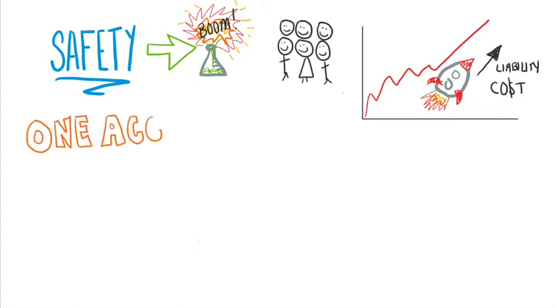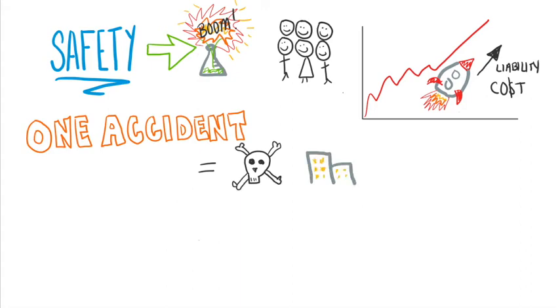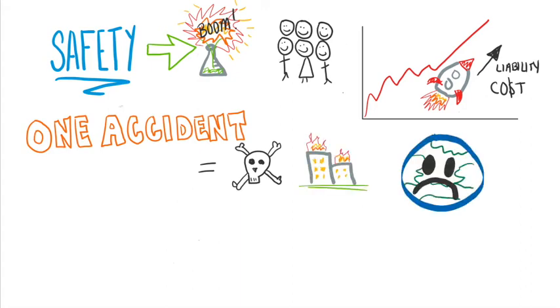The immediate impacts of a single accident can lead to loss of lives, damaged property and businesses, or even severe environmental impact. These accidents can be in the form of fire, explosion, and toxic release.